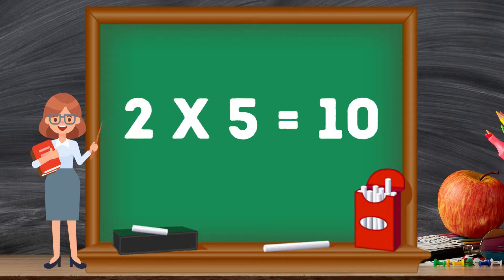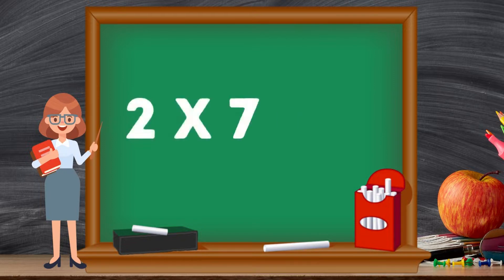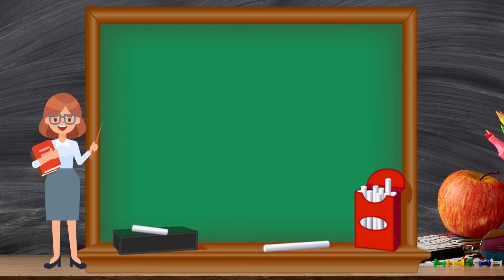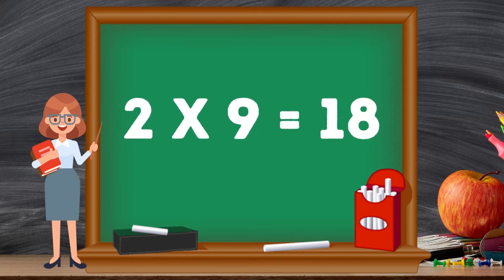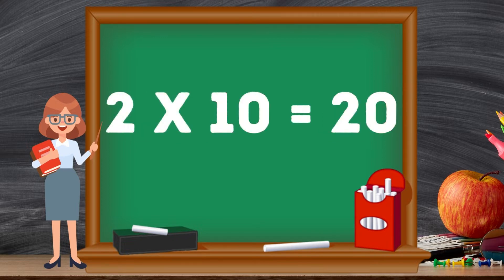Two fives are ten. Two sixes are twelve. Two sevens are fourteen, two sevens are fourteen. Two eights are sixteen. Two nines are eighteen, two nines are eighteen. Two tens are twenty, two tens are twenty.